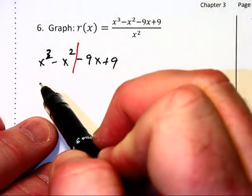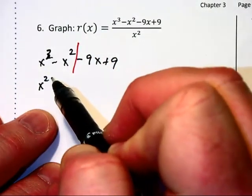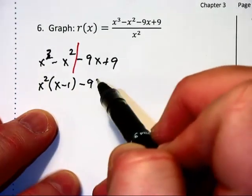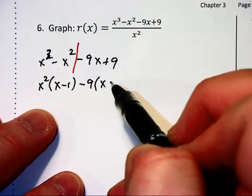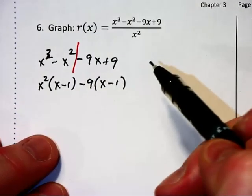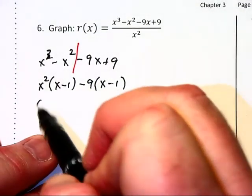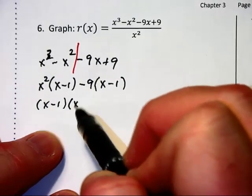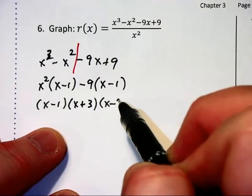From the first two terms, we can factor out an x squared and have x minus 1 left over, then factor out a minus 9 and have x minus 1 left over. This becomes x minus 1 times x squared minus 9, which becomes x plus 3 and x minus 3.